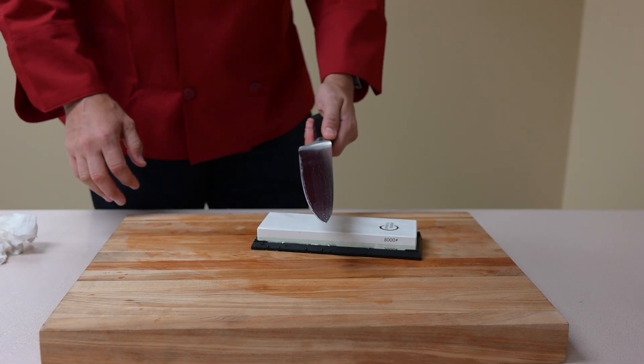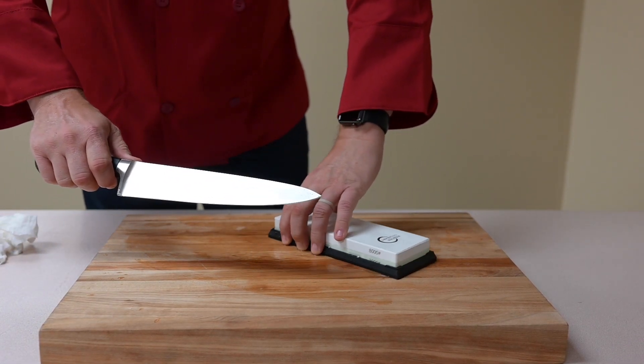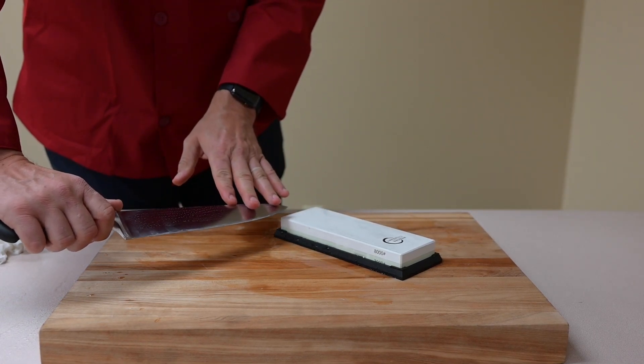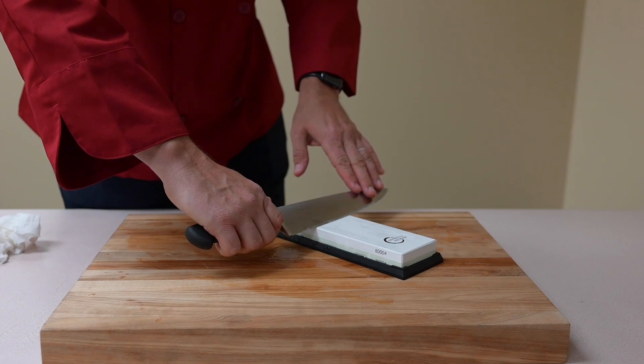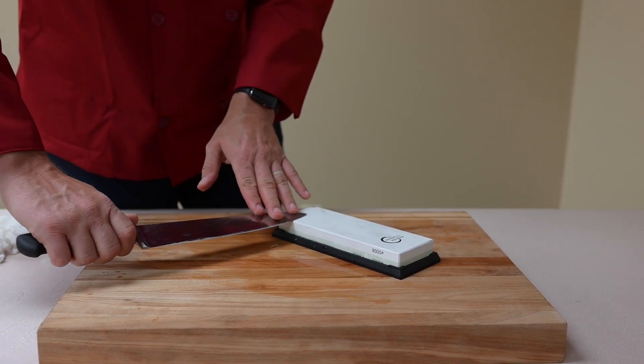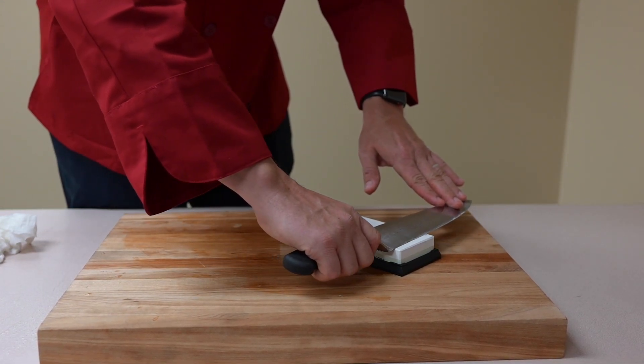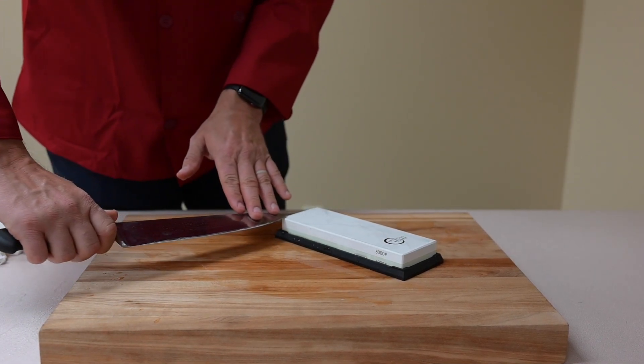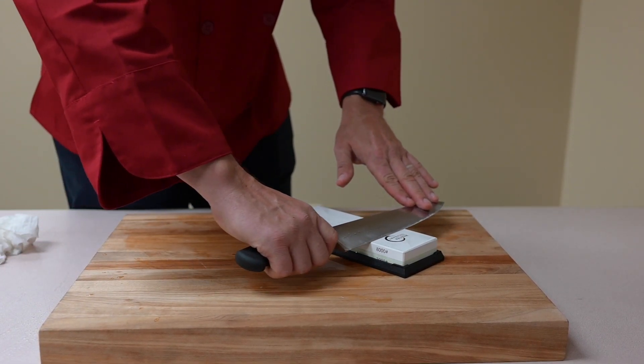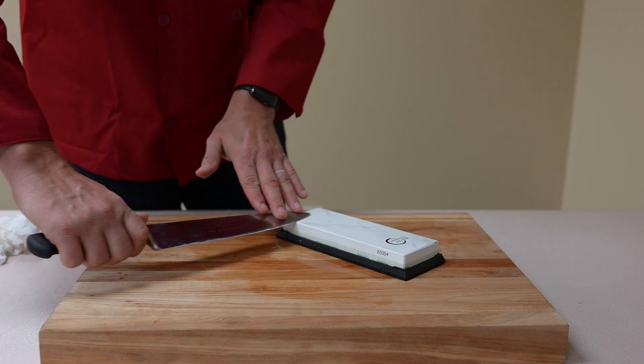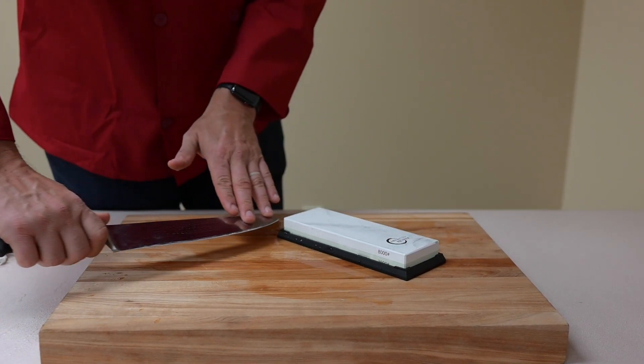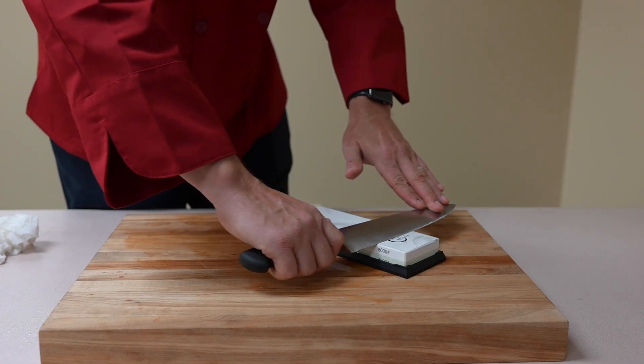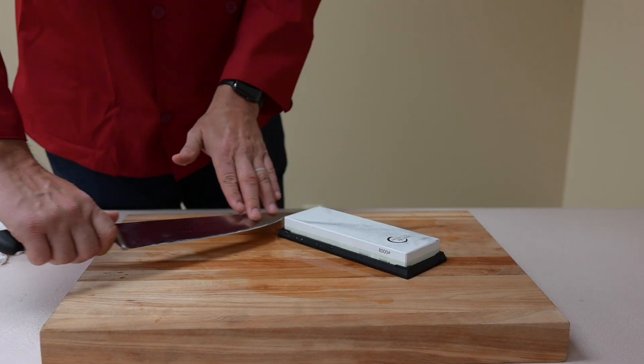So next side here we're going to flip it over and my personal preference is to use the other hand—do what works best for you. Same process: 90, halfway, halfway again, nice and straight using the entire length of the stone to sharpen the entire length of the knife. Just like that.